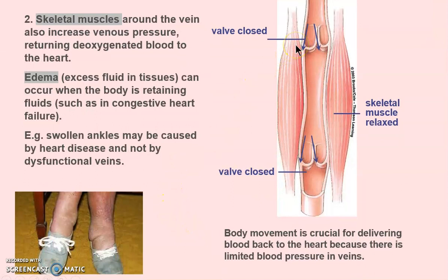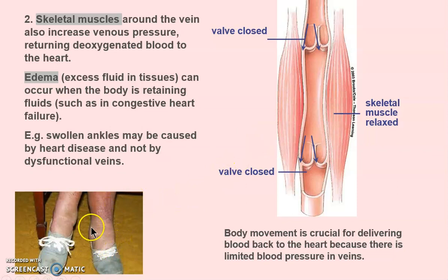Skeletal muscle contraction is a major way blood gets back to the heart — that's why we have to move. With patients, you sometimes have to turn them or put them on a machine that moves their body, because without muscle contractions there's pooling of blood. We see swollen ankles in patients with congestive heart failure. Often the veins are doing their job but we are not moving enough. We have to keep moving.